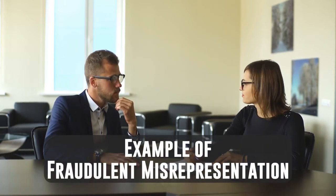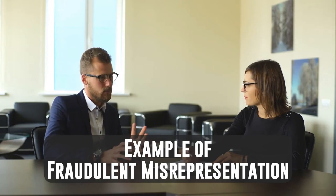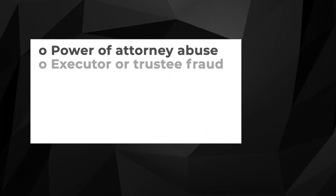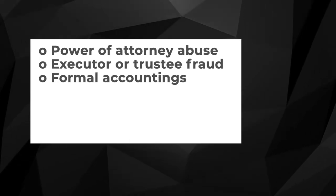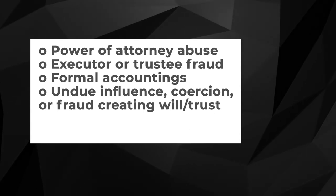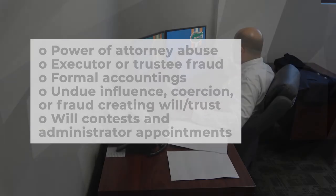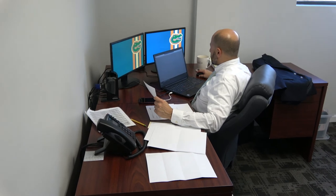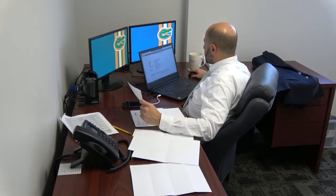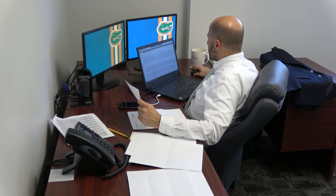An example of fraudulent misrepresentation could include probate fraudulent misrepresentation when an interested party has a claim. However, to substantiate the claim, a plaintiff must be able to provide detailed, factual evidence to satisfy each of the four elements of fraudulent misrepresentation. Situations where fraudulent misrepresentation may occur include: power of attorney abuse, executor or trustee fraud, formal accountings, undue influence, coercion or fraud in the creation of a trust or will, and will contests and administrator appointment hearings. If you believe that someone has misrepresented information at any stage of the probate process, or in the creation of a will or trust, or in a business or real estate contract, you should contact a probate or business attorney.